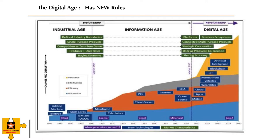This slide talks about the three ages: the industrial age, the information age, and the digital age. We will focus on the digital age, and the green boxes you see are the market characteristics — and you'll see when we go through them that all of these are very much in synergy with each other.